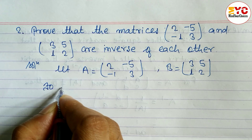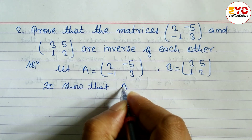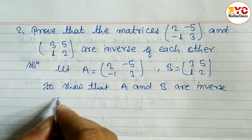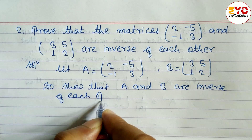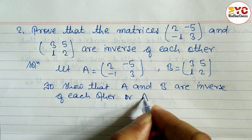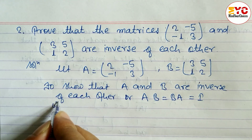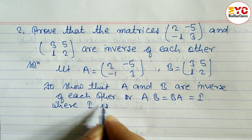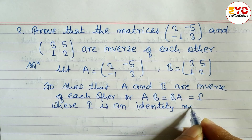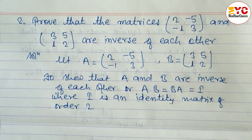To show that A and B are inverse of each other, we have to show that AB is equal to BA is equal to I, where I is the identity matrix of order two.